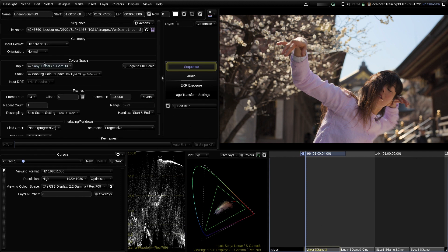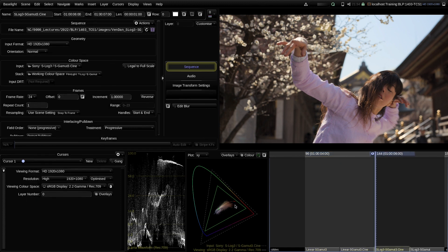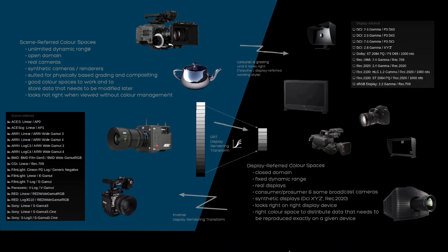All color spaces in Baselight are grouped into two groups. The first has a camera icon — these are the scene-referred color spaces. The second are the display-referred color spaces with a display icon. Scene-referred color spaces store light energy from a scene that a camera captures — real cameras, but also synthetic cameras like CG renderers can produce scene-referred color values.